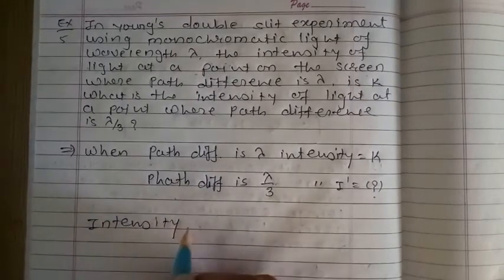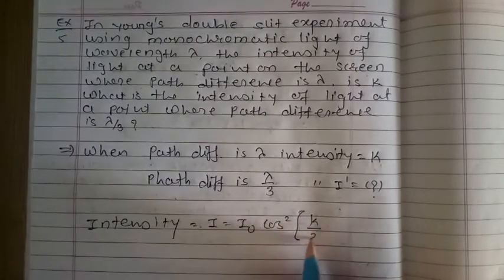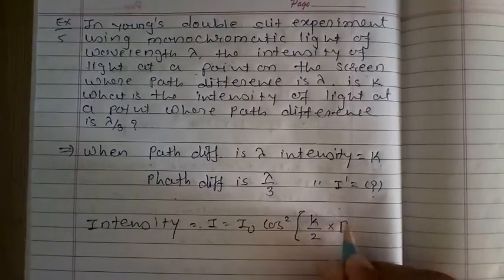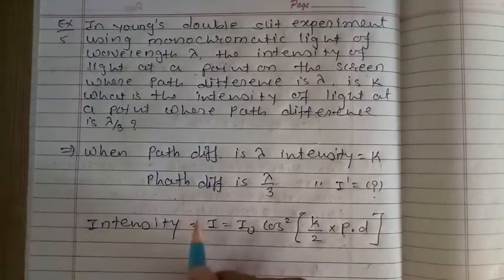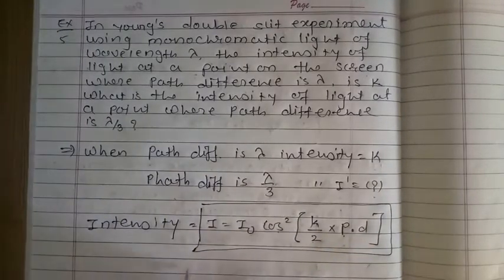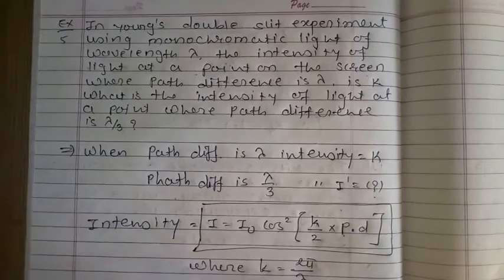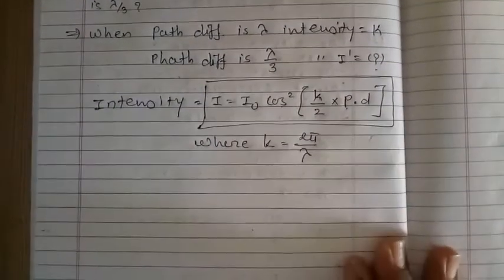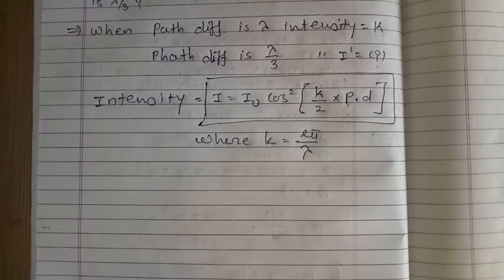You have to remember the formula of intensity: I is equal to I₀ cos square (k/2 into PD), where PD means path difference and k is equal to 2 pi by lambda. Remember this formula: I equals I₀ cos square (k/2 into path difference), where k equals 2 pi by lambda.